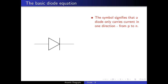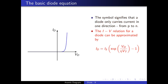In the last lecture we saw that the current density in the diode is made out of two pieces: a diffusion current and a drift current. The diffusion current depends exponentially on the voltage applied to the diode, whereas the drift current is more or less the same irrespective of what the voltage is. If you put the two together you get an expression for the current density in a diode as a function of the voltage across it.